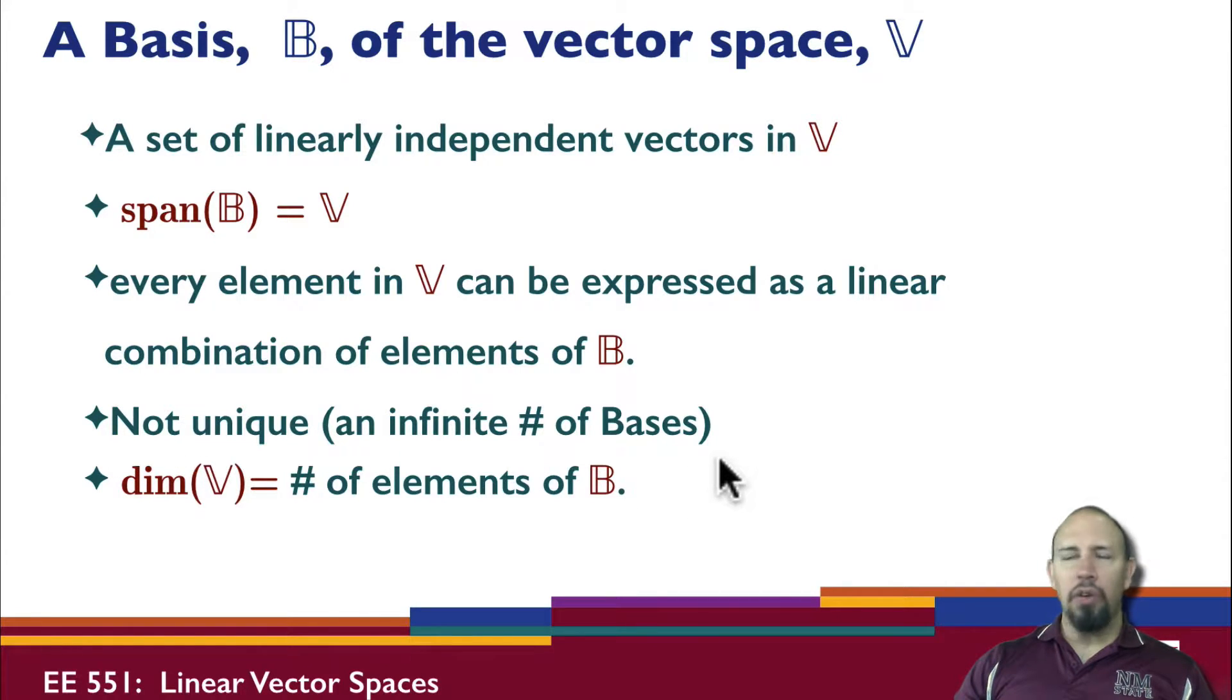The basis is not unique. In general, there are an infinite number of bases. The dimension of the vector space is equal to the number of elements of the basis. Since they must be independent, we have as many elements in B as the dimension of the vector space.